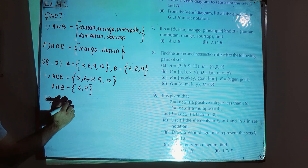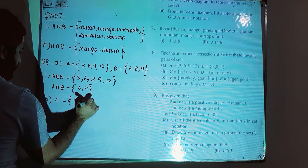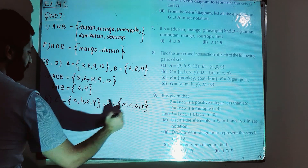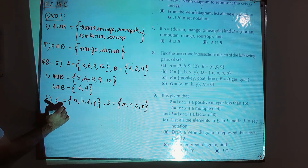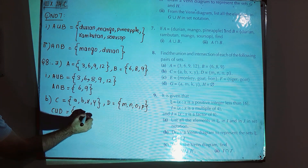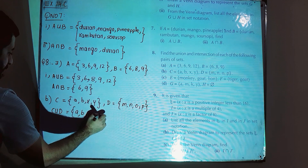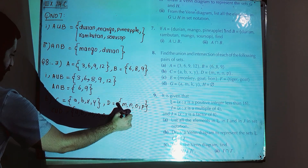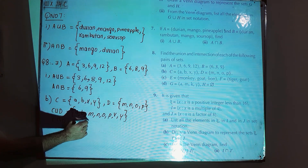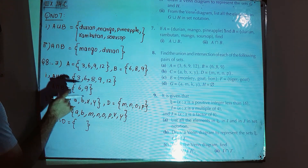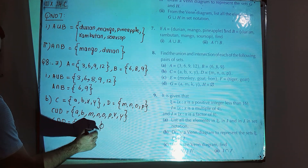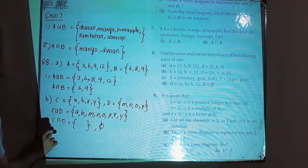Part b: set C = {a, b, x, y} and set D = {m, n, o, p}. For C union D, write all elements in a single set: {a, b, m, n, o, p, x, y}. For C intersection D, there are no elements common to both sets, so the answer is the empty set.